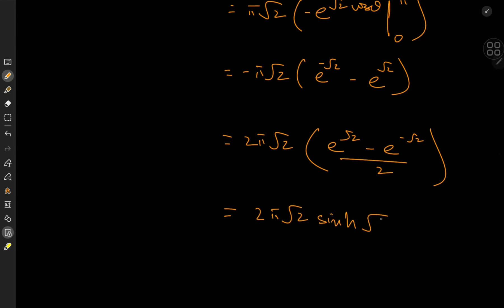In other words, the integral results in 2pi root 2 times the hyperbolic sine or sinh of root 2, which makes its first appearance on the channel. sinh of root 2—root 2 is a familiar face here, but yeah, this is the first time we're getting the hyperbolic sine of it.